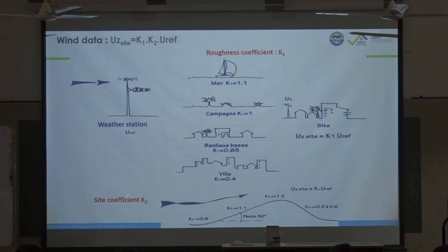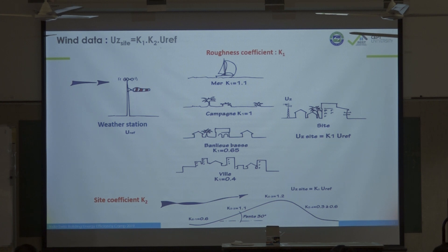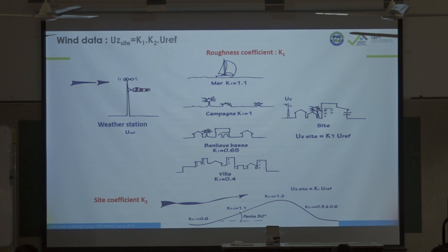k2 depends on the topography on site and k1 depends on the roughness. Once you collect the weather data in CSV format, you create a new column and multiply the wind intensity by those two coefficients to generate a new weather file on site. After that, you determine which ventilation strategy to adopt.